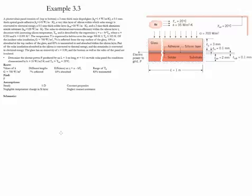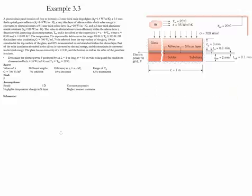The efficiency of the silicon layer is a function of temperature and is described with this equation. The temperature of the silicon ranges from 300 to 527 Kelvin. The glass has a given emissivity, and the goal of the problem is to find the electrical power produced by this panel.